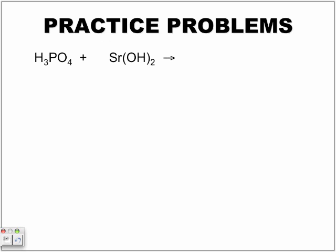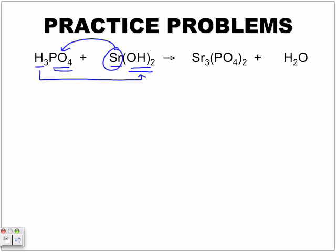Let's look at a few practice problems. H3PO4 — phosphoric acid — and strontium hydroxide. We treat hydrogen as the cation, the metal, paired with its non-metal. We know that hydrogen is going to combine with the hydroxide to form the water, and ultimately this metal is going to combine with this non-metal to form our salt. The last step is to balance the equation using the appropriate coefficients.